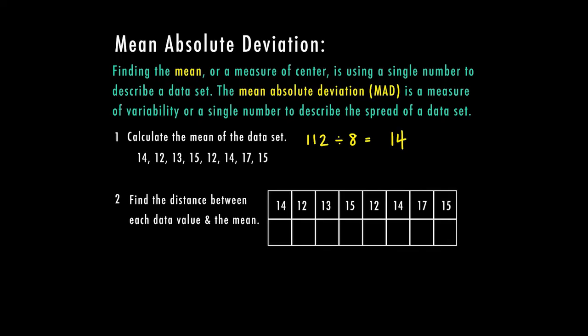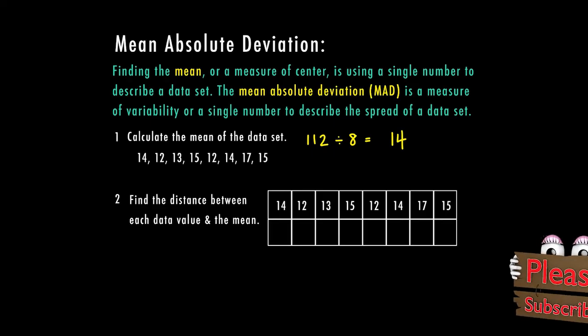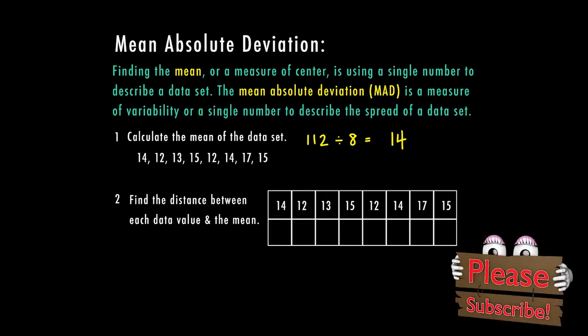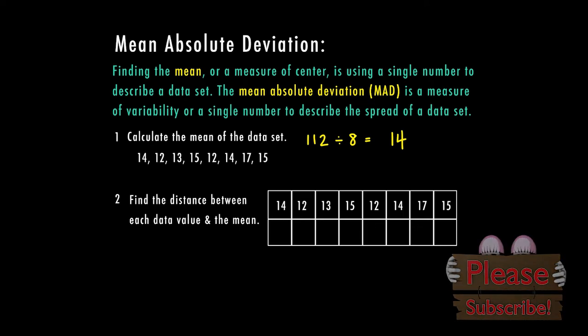Now the second step is where we have to use that mean and find the distance between each of the data values. This is where the absolute comes in because we know that absolute value means the distance from zero on a number line. In this case when we're finding the absolute distance between the data value and the mean we want to know what is the distance between each of these numbers in the list and our mean.